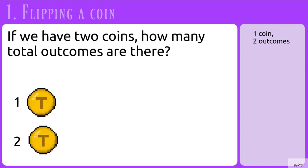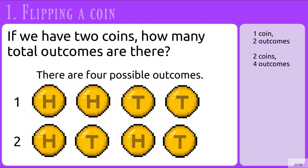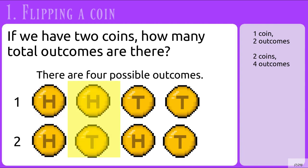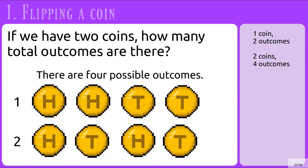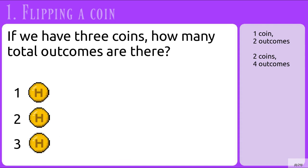And if we have two coins, how many total outcomes will there be? There will be four total outcomes. We can either get both heads, both tails, or we could get heads for the first and tails for the second, or tails for the first and heads for the second. So for one coin there are two outcomes, and for two coins there are four outcomes.